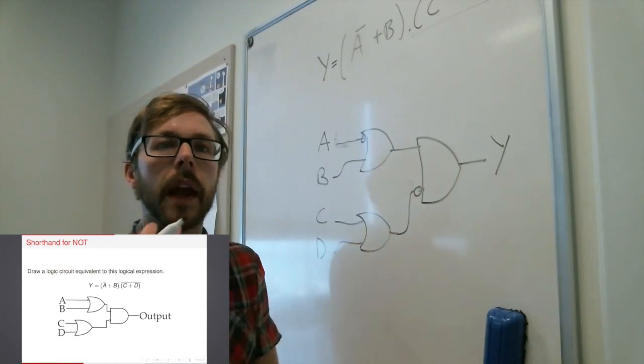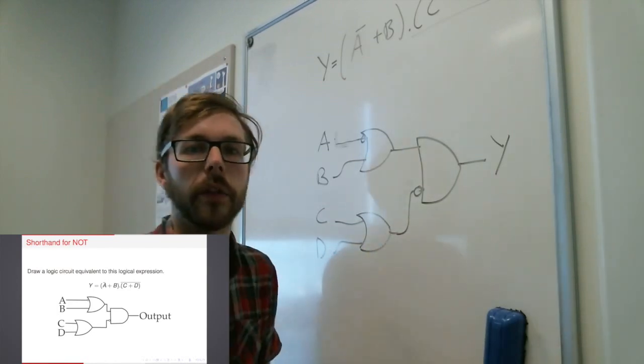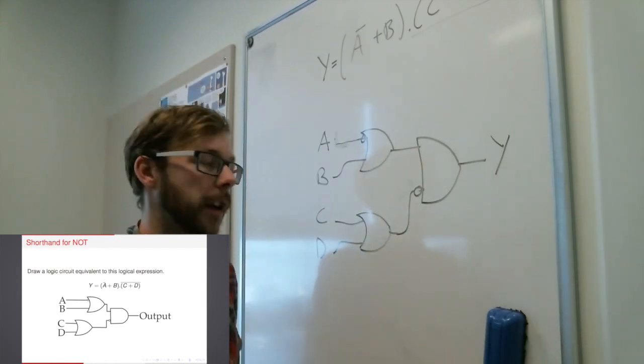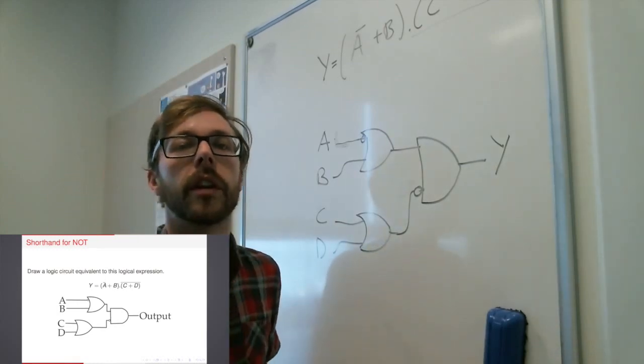So that means this is exactly equivalent to that, where the little circle is just annotating a NOT rather than having to show the whole gate. Because as you can imagine in logical expressions, NOTs become very, very common,